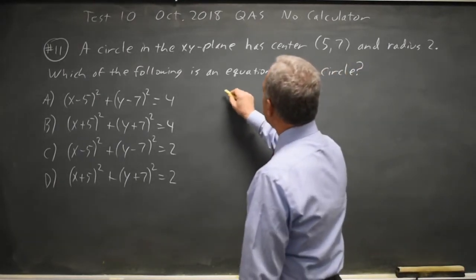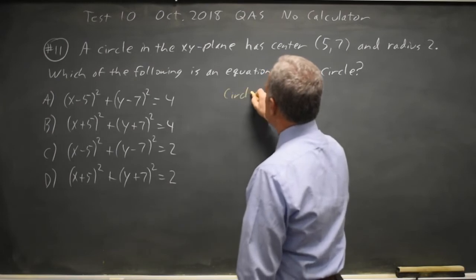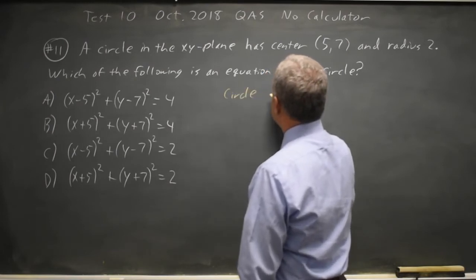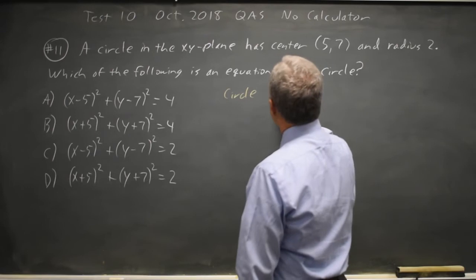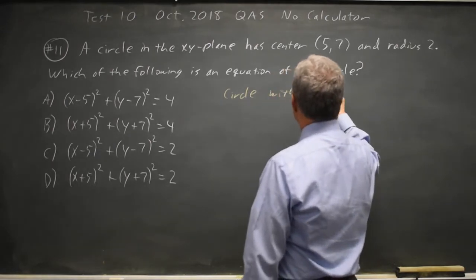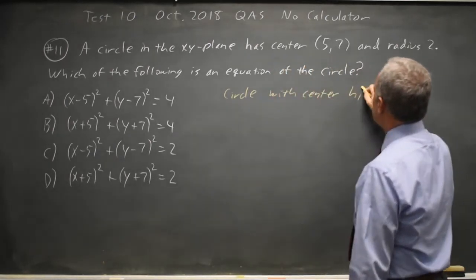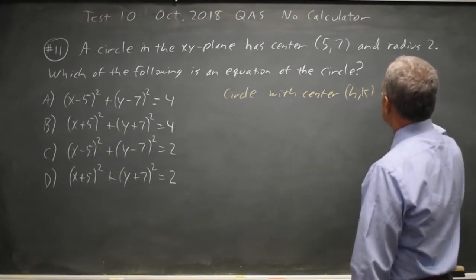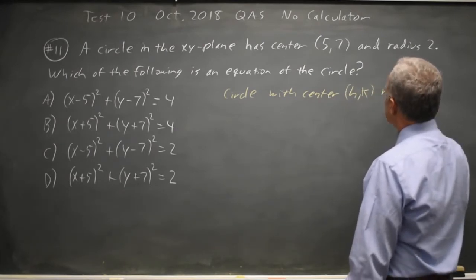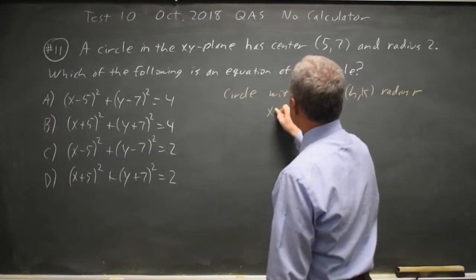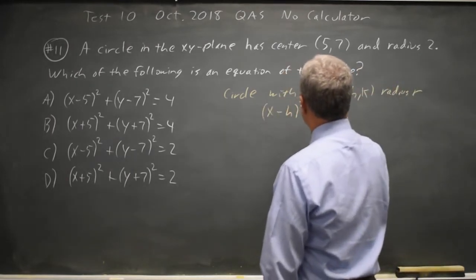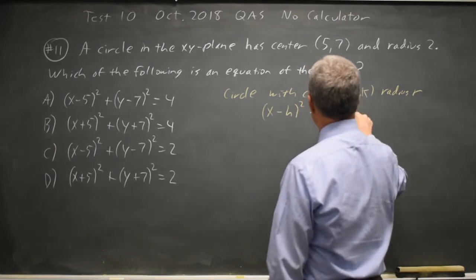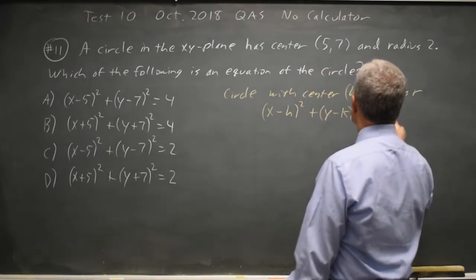I always start by writing: for a circle with center (h, k) and radius r, the equation is (x - h)² + (y - k)² = r².